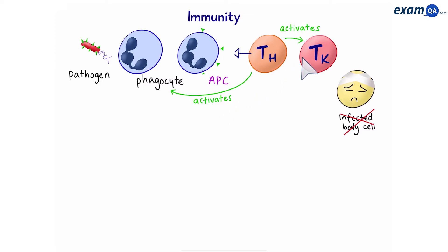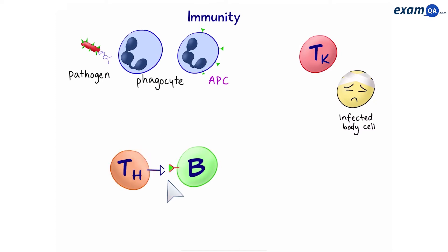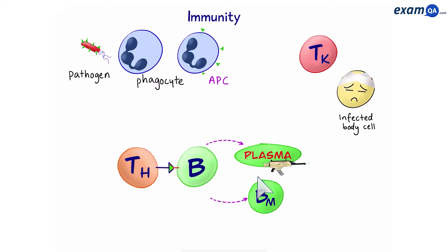At the same time, a B cell is floating through the blood and it has caught an antigen. The T helper cell will find the B cell and bind to it. This stimulates the B cell. It divides by mitosis to make more copies of B cells, which then turn into plasma cells and B memory cells. The plasma cells produce antibodies which go and destroy the pathogen.